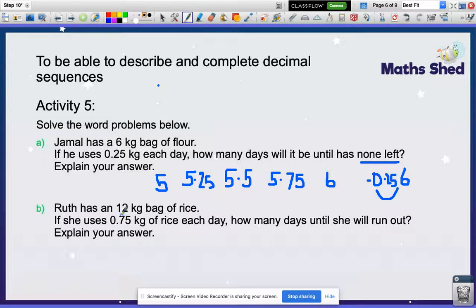This one, Ruth has a 12 kilogram bag of rice. If she uses 0.75 kg each day, how many days until she runs out? So you've got to do exactly the same thing. Only you would start at 12, and you're going to count back by 0.75 each time. So you would get to 11.25. You've got to take away 0.75 each time. This one would be 10.75, 9.75. And you would keep going until you've got to 0, and then count how many numbers you've got to work out the days.